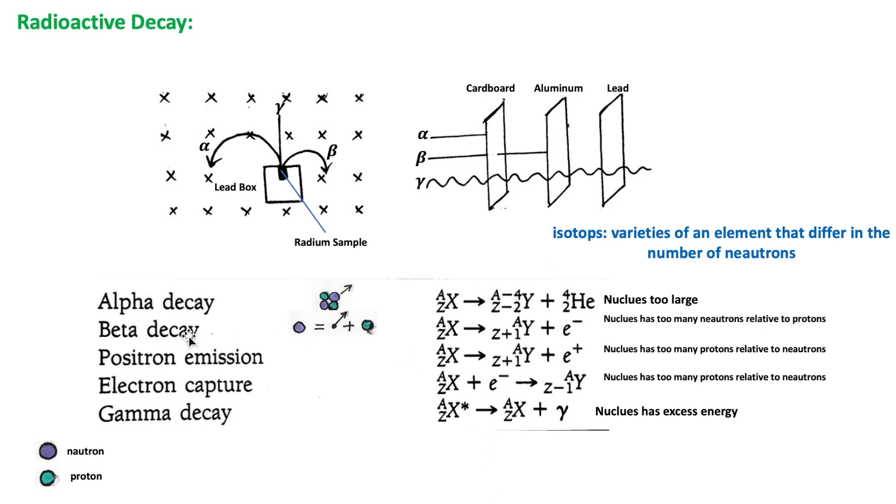In the case of beta decay, the reason for the decay is that the nucleus has too many neutrons relative to the number of protons. The emission of an electron by a neutron in the nucleus will change the neutron into a proton.